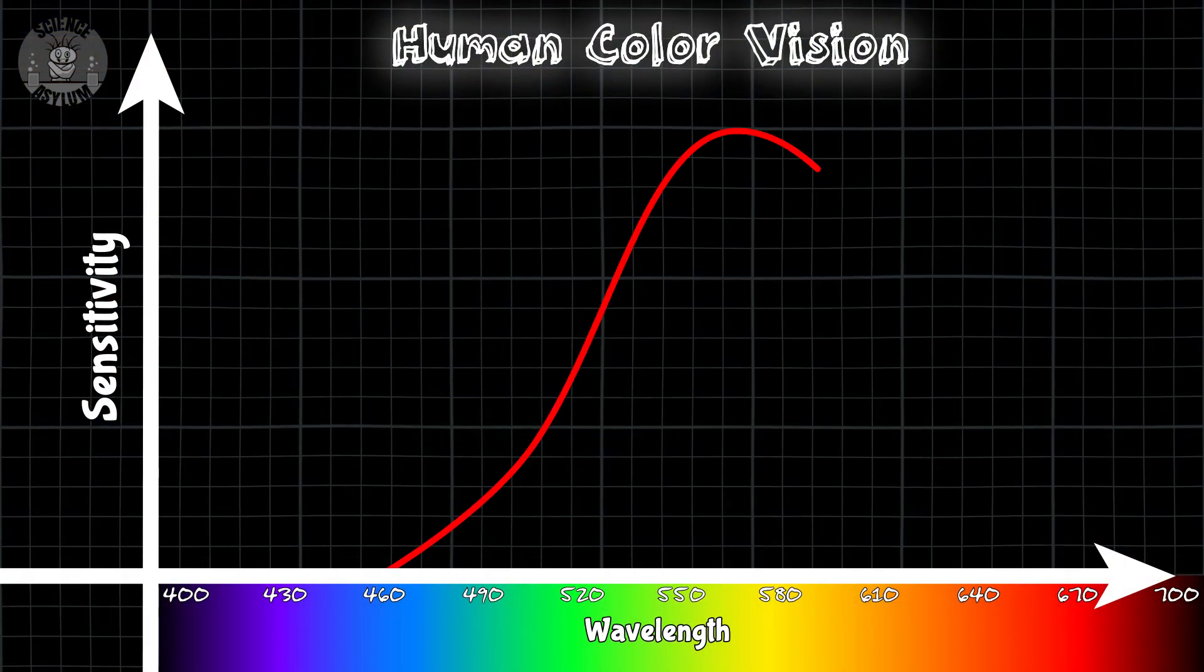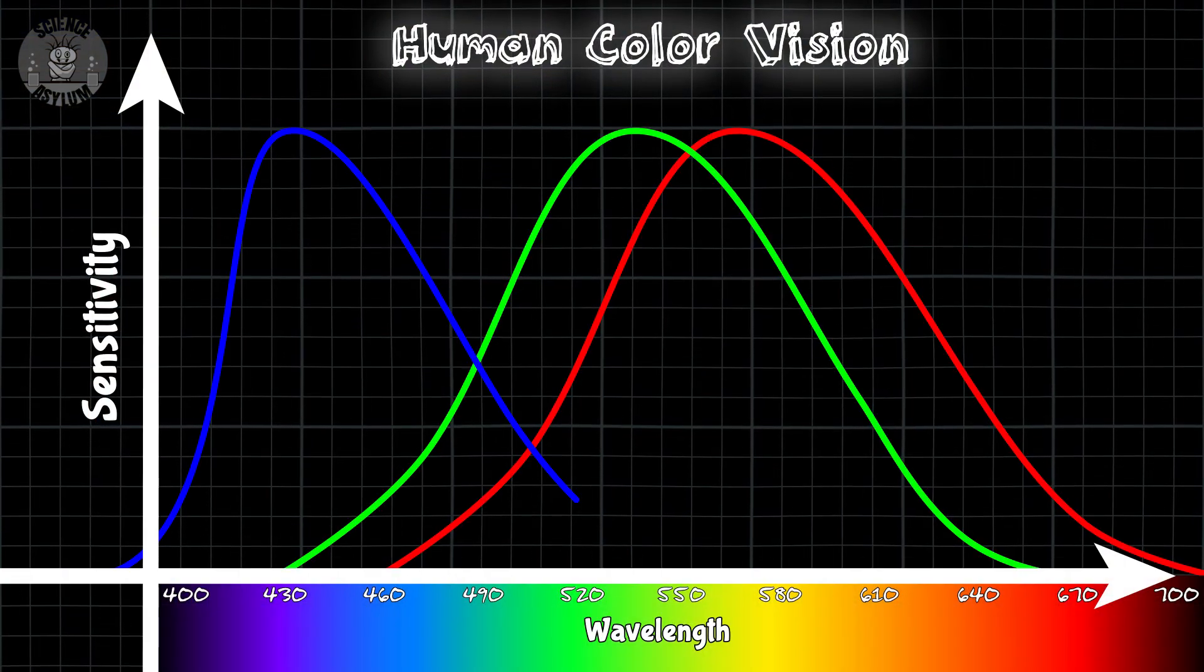Your eyes can only see three types of colors, red, green, and blue. So that's all your screen has to display. Red and green set to full brightness is going to look yellow to your brain, even if it isn't yellow.